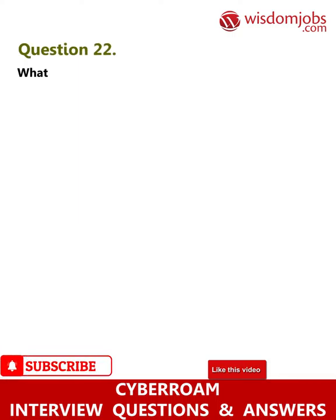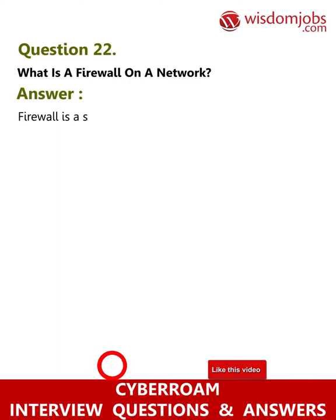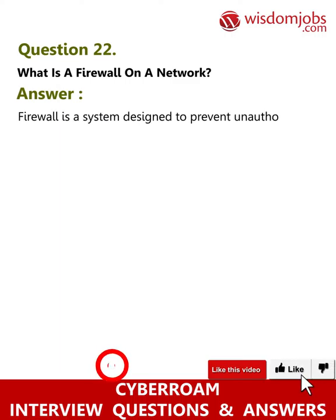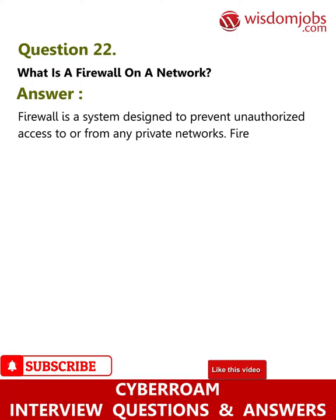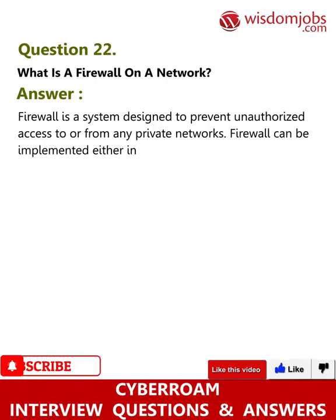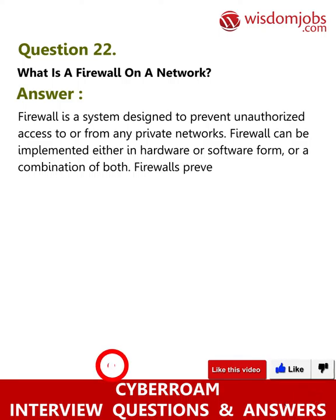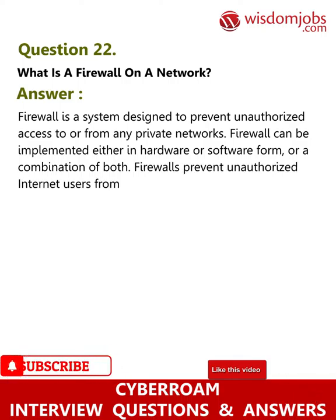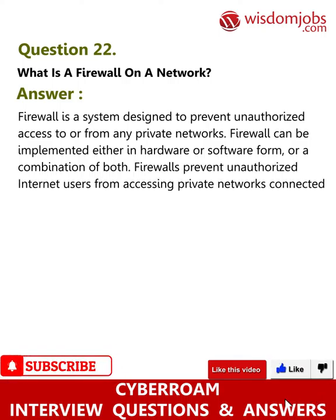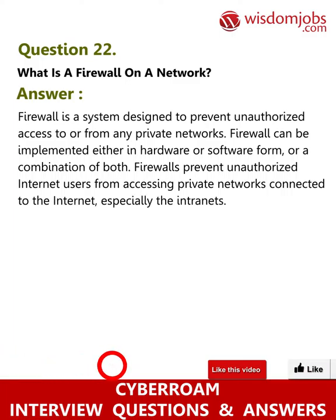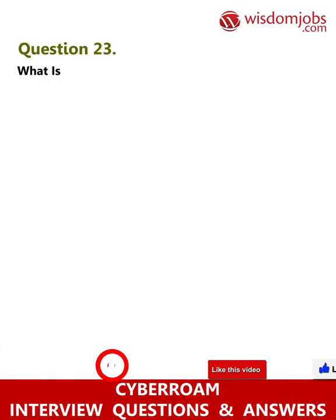Question 22: What is a firewall on a network? A firewall is a system designed to prevent unauthorized access to or from any private network. It can be implemented in hardware, software, or a combination of both. Firewalls prevent unauthorized internet users from accessing private networks connected to the internet, especially intranets.